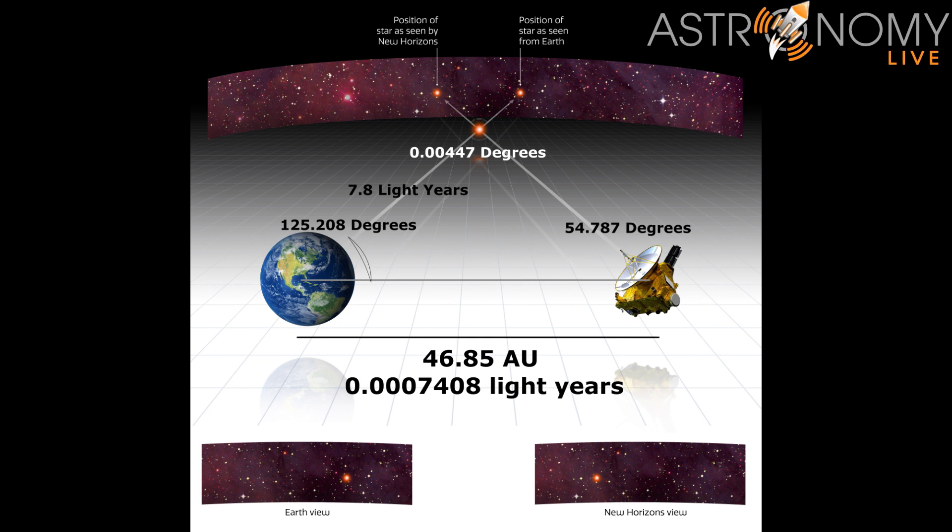So now, using the law of sines and taking 0.0007408 light years divided by the sine of 0.00447 degrees, and multiplying all of this by the sine of 54.787 degrees, we find that the distance to Wolf 359 is roughly 7.8 light years. Pretty much right on the money.